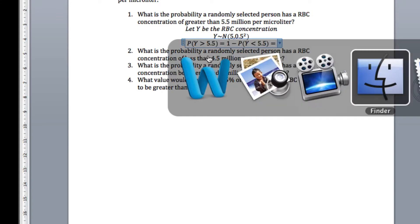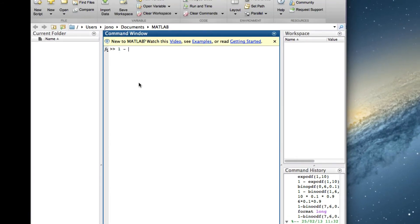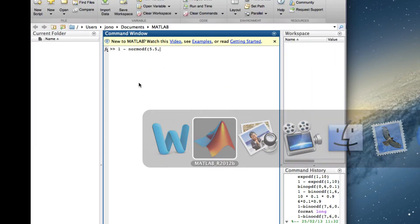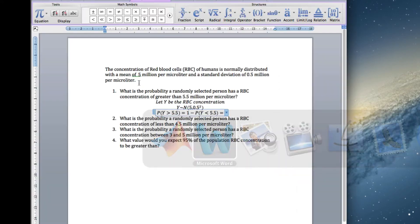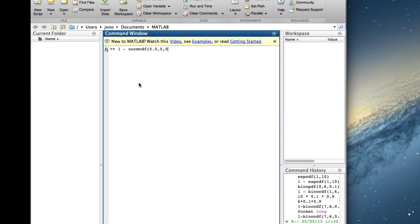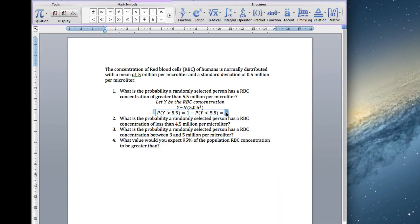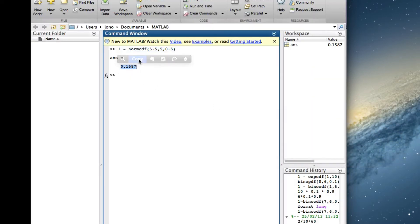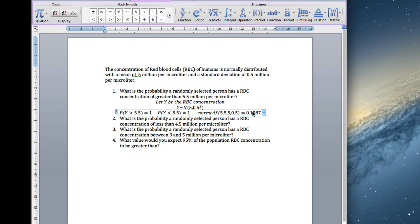Get MATLAB up. 1 minus norm CDF, so I'm going to put in 5.5, then I have to give mu, which is the mean, so we know that the mean is 5, and the standard deviation I need next, which is 0.5. And there's the answer. I'm going to put this in as before so I can get marks if I've typed it in wrong. They'll still show understanding. Finally, give the answer. Done.